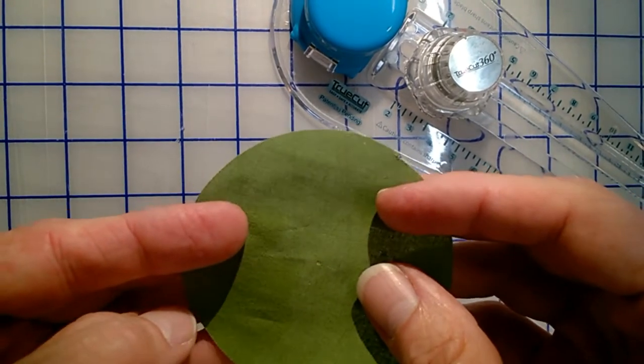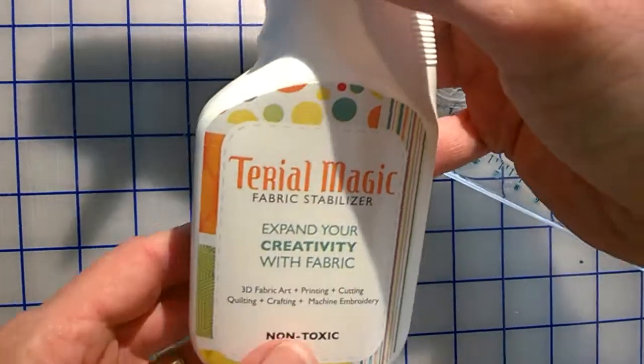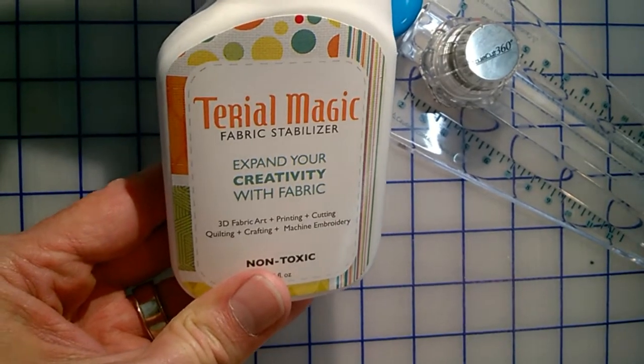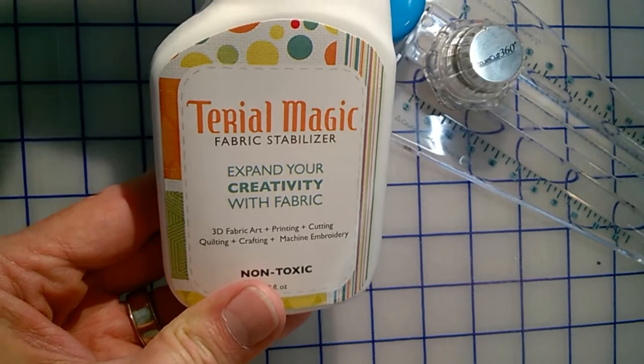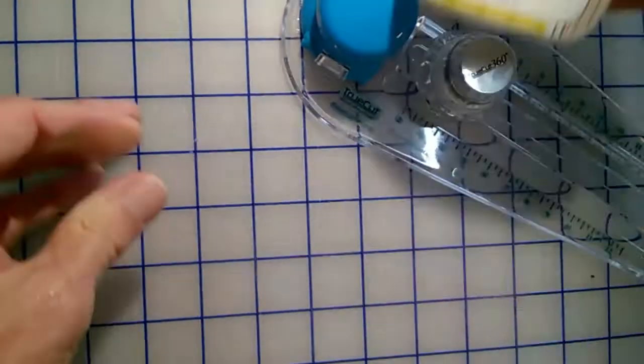So then we have a product called Terial Magic. And Terial Magic is a stabilizer, a liquid stabilizer that you can use virtually on any fabric for multitudes of reasons, including doing embroidery without having to put a stabilizer behind it. Now I've taken the same piece of green fabric and I put Terial Magic on it, so now you can see it kind of like cardboard. It'll stand up by itself just about.